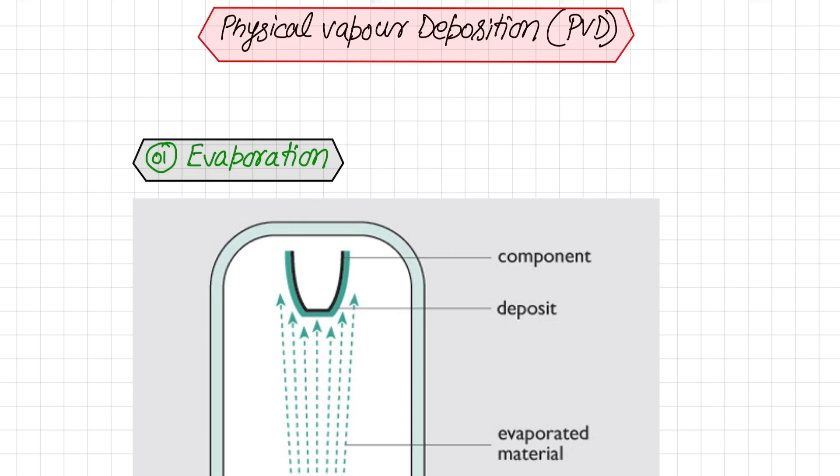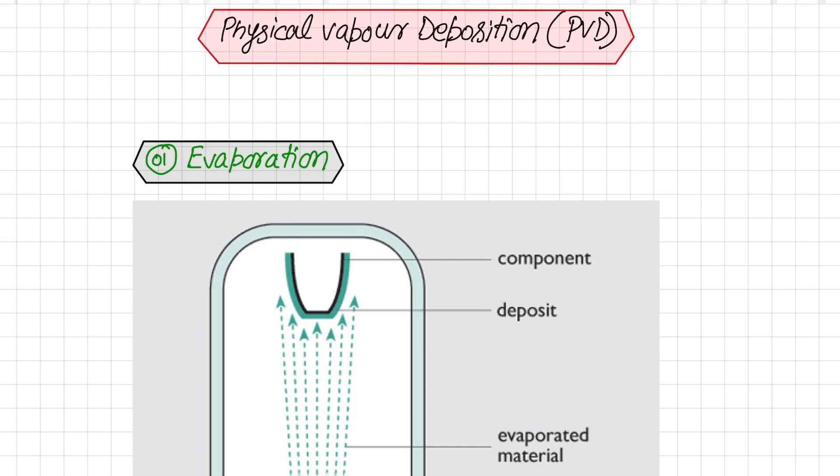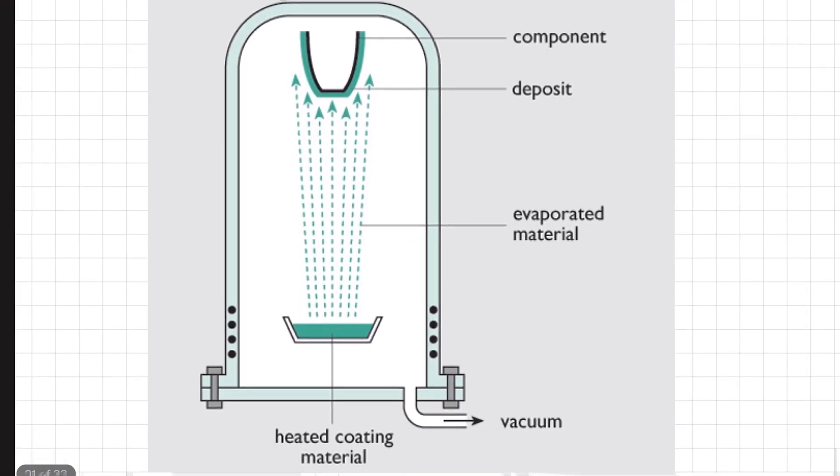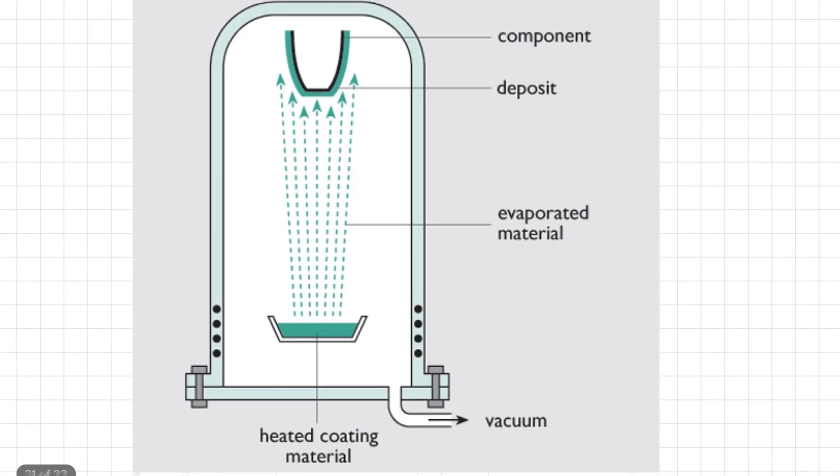So there is no precursor chemical reaction before deposition. In general, PVD methods are subdivided into evaporation, sputtering, and pulsed laser deposition or laser ablation. First of all, we will discuss the evaporation method.